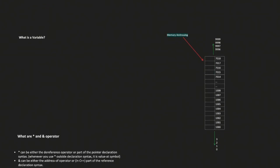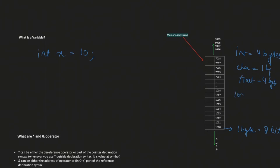Let's go back to basics and see what happens when we declare a value. If I declare int x = 10, I have a memory table where each memory segment has one byte, or eight bits. Each data type has its own memory containers: an integer takes four bytes, a character takes one byte, a float takes four bytes, and a long int or double takes eight bytes. These numbers are for a 32-bit machine.